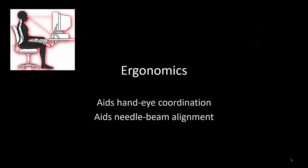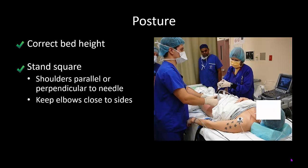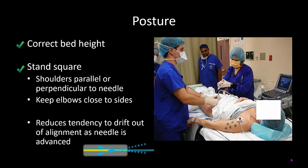Related to positioning is the issue of ergonomics. Good ergonomics helps with hand-eye coordination and needle-beam alignment. Simple things to pay attention to include appropriate bed height to avoid stooping, standing square so that your shoulders are either parallel to the needle in the along approach or perpendicular to the needle in the across approach, and keeping your elbows close to your side. These maneuvers reduce the tendency to drift out of alignment as the needle is advanced.